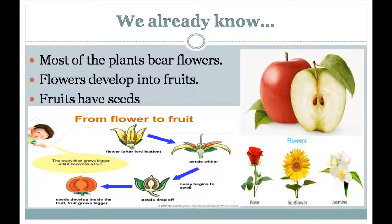Dear students, we already know that as the plants grow, buds begin to appear on some plants. They soon grow into flowers. Flowers are the most attractive part of the plant — they are of different shapes, sizes, colors and fragrances. Flowers provide food to butterflies and honeybees in the form of nectar.